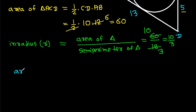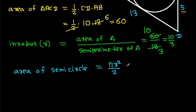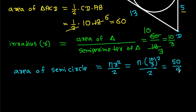So the area of the semicircle will be pi R squared over 2, which is pi times (10/3) squared over 2, giving 50 over 9 pi.